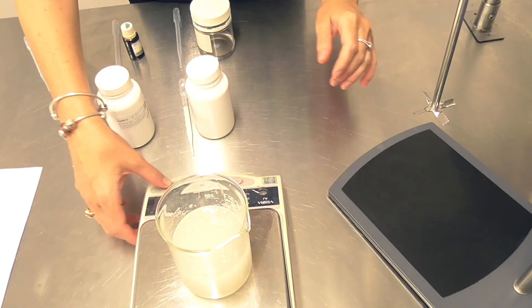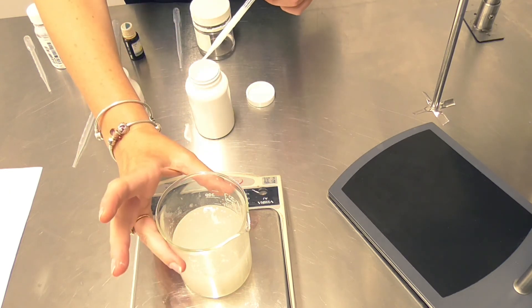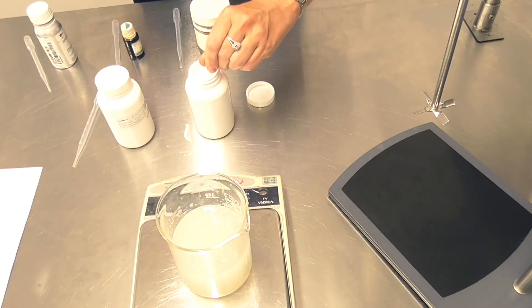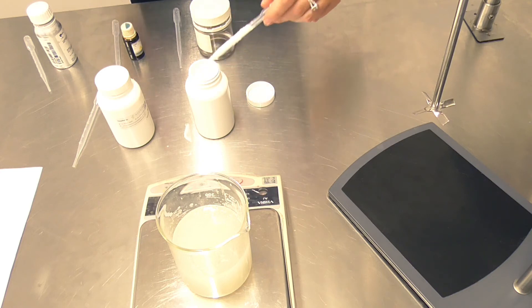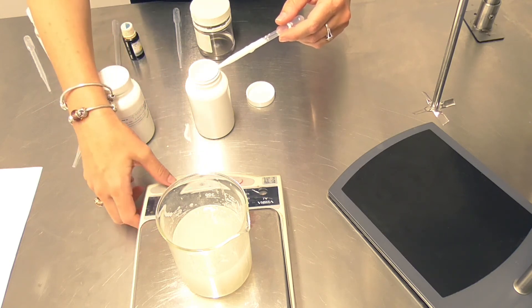Okay, so now we're going to finish this product off. We needed the gums to fully hydrate because we need them to help stabilize what we're about to add. I'm purposely avoiding standard emulsifiers to keep the product really light on the hair.